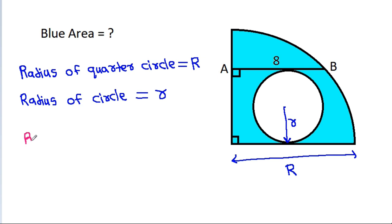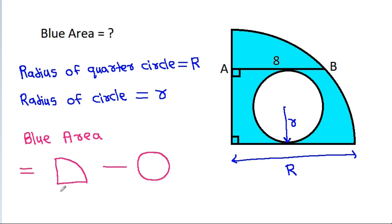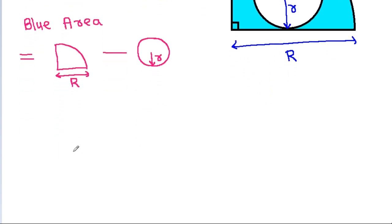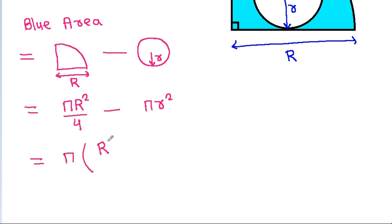The blue area will be equal to the area of the quarter circle minus the area of the circle. The radius of the quarter circle is capital R and the radius of the circle is r. So the area of the quarter circle is pi times R squared divided by 4, minus the area of the circle which is pi times r squared, giving us pi times (R squared over 4 minus r squared).